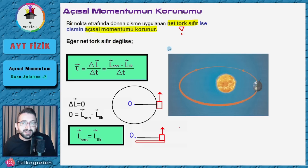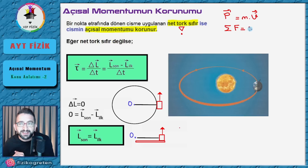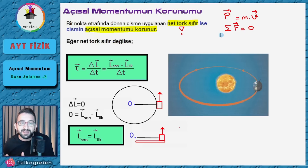11. sınıfta öğrenmiştik: çizgisel momentum P = M × V idi ve V'nin yönü ne tarafa doğruysa momentumun yönü de o tarafa doğruydu. Çizgisel momentumun korunması için bir sisteme etki eden toplam kuvvet sıfır olması gerekir. Ama açsal momentumun korunması için sisteme hiçbir kuvvet etki etmeyecek diye bir kural yok. Dış tork sıfır olursa açsal momentum korunur.